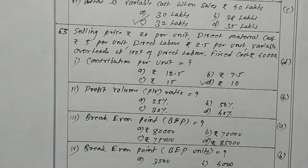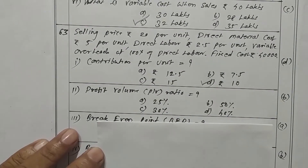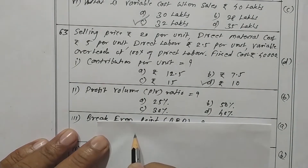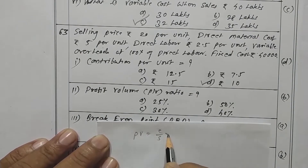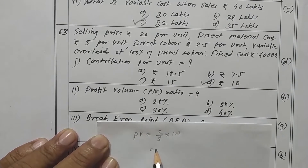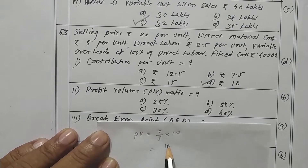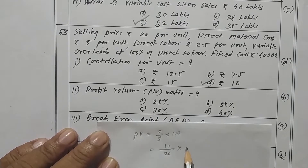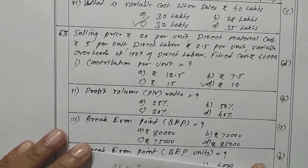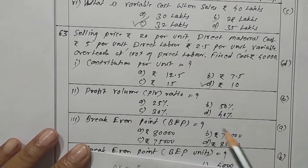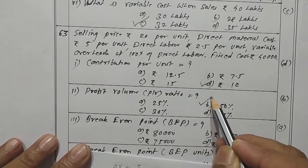Now PV ratio. The formula is contribution upon sales into 100. Contribution is rupees 10 and sales is rupees 20, so 10 upon 20 into 100 gives 50 percent. Option D is the correct one.